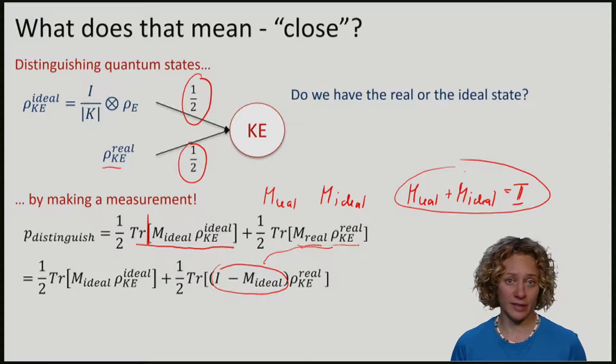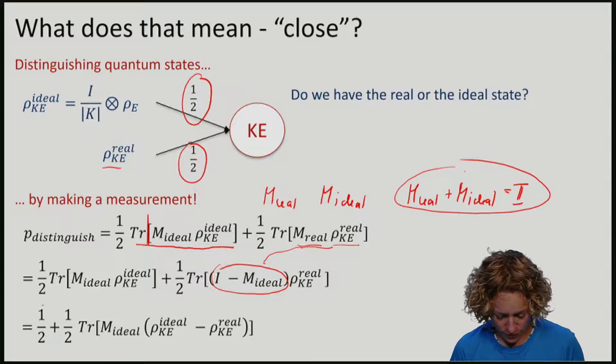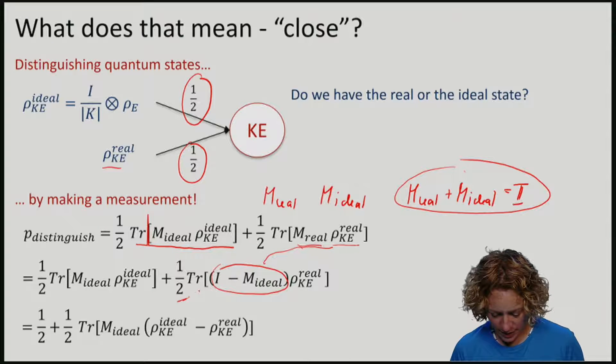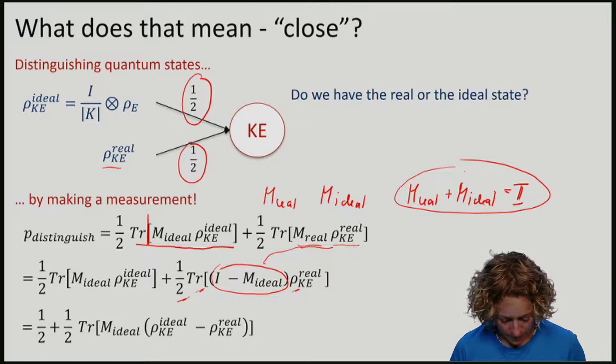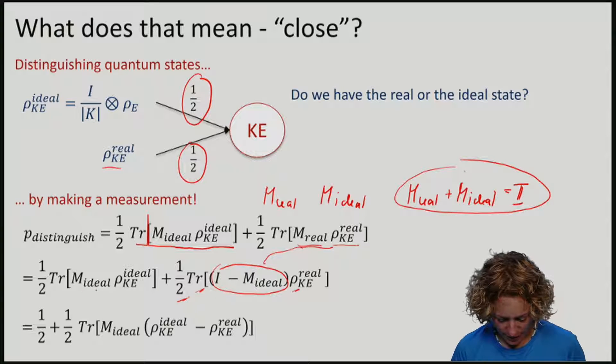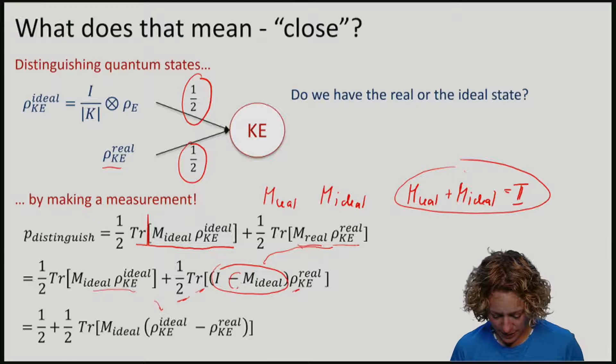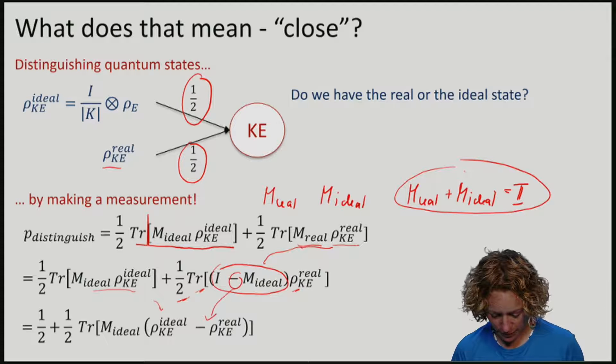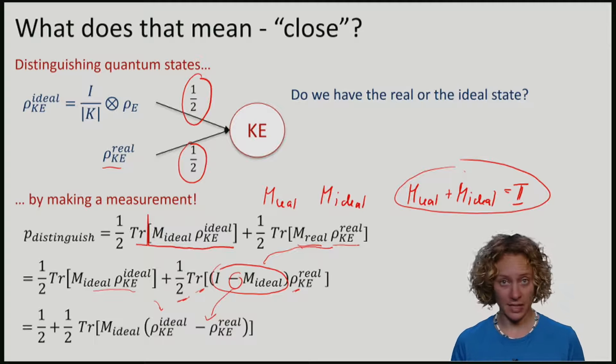Let me reshuffle this a bit. So, what I have is I have a half out front. This comes from here, a half, times the trace of ρ. Remember that the trace of ρ is one. And what do I have here? I have a half. This here I've just carried over. And now I have here minus M ideal times the ρ real. So, I put M ideal in front and I put the minus here. So, this is the expression that we get.